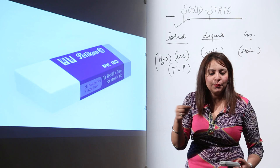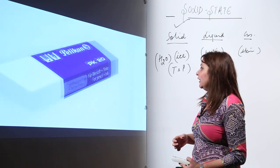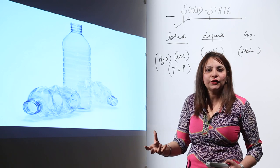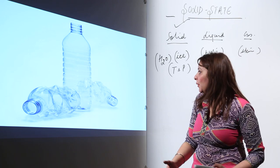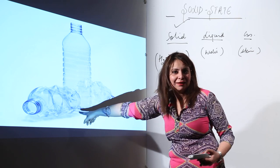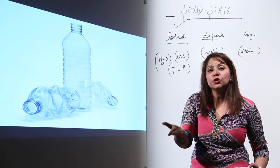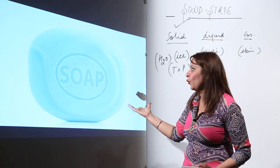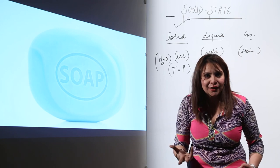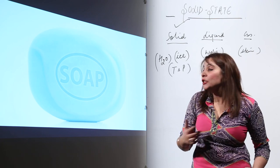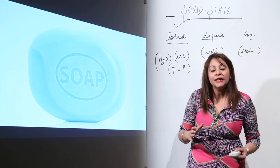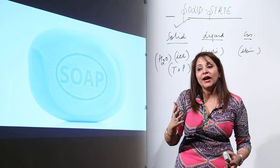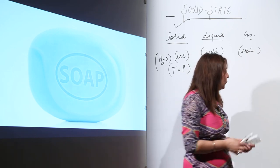A plastic bottle is a solid that can be molded: if you heat it you can crush or reshape it, unlike an iron bar which is unaffected by such conditions. Soap has the property of cleansing action, which is not possessed by a pen or a table. So different solids have different properties, and because of those different properties they are used in different fields. To sum up, we are listing the general properties of solids.